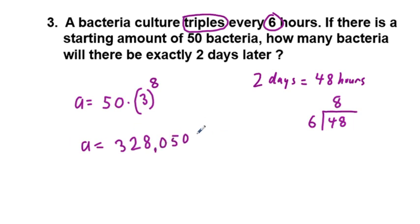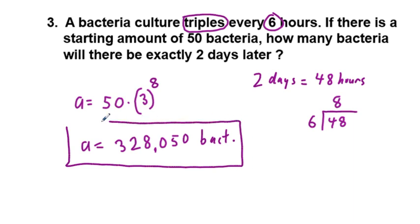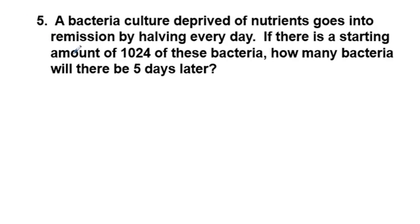Okay, so that's going to be bacteria, I'm going to abbreviate. Not too hard, is it? Next, let's go to the next problem, which is five. The bacteria culture deprived of nutrients goes into remission by halving every day. If there is a starting amount of 1024 of these bacteria, how many bacteria will there be five days later? In this case what we have is the same format. We have a, which we do not yet know, is equal to our starting amount, which is 1024 times our base.